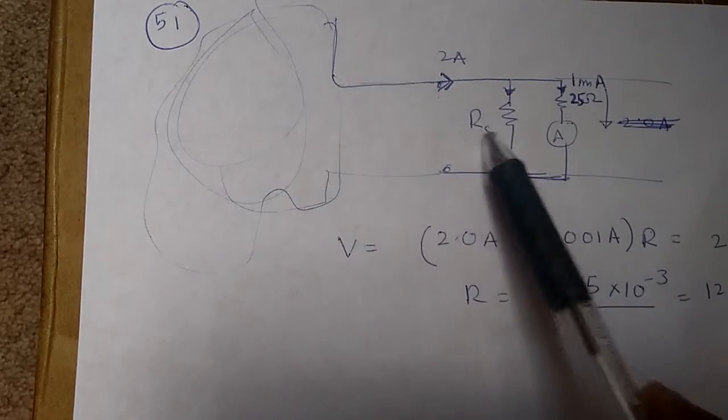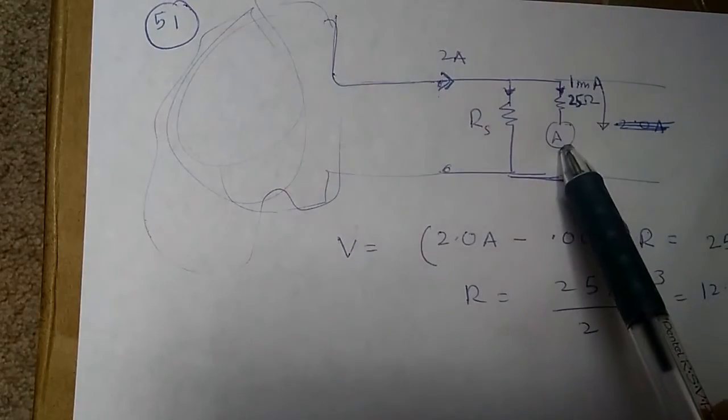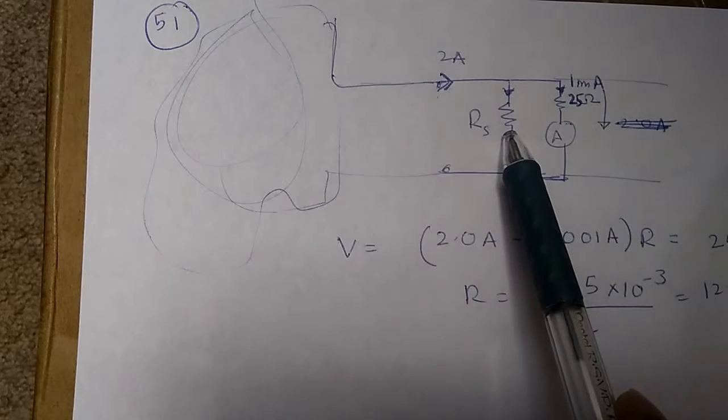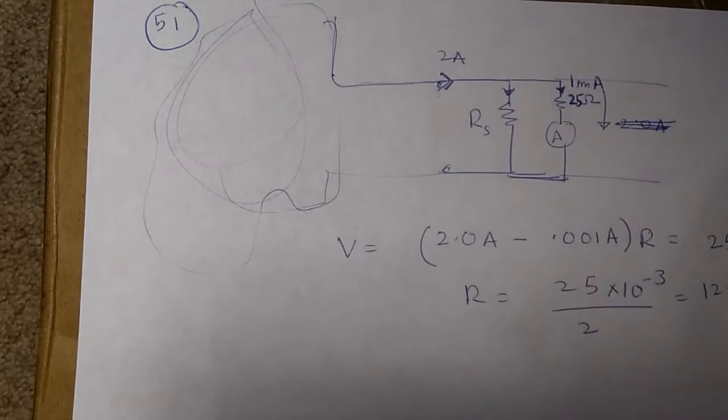Secondly, because of this resistor, we have a very small current flowing through the ammeter. What should be the correct value of the shunt resistor so we can measure up to 2A with only 1 mA through the ammeter?